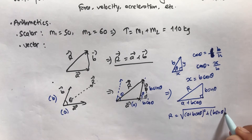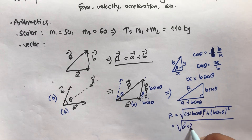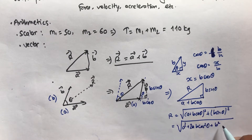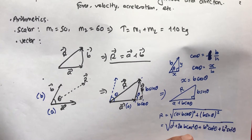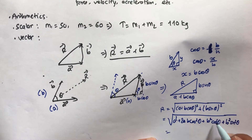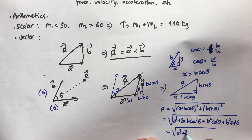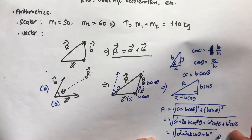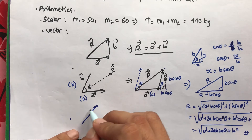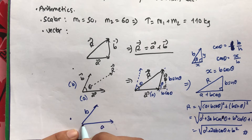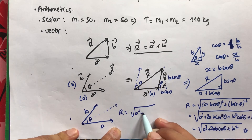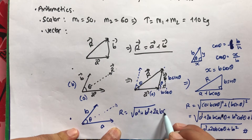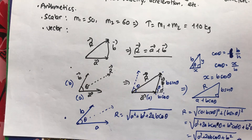Expanding that expression: r equals the square root of a² + 2ab·cos(theta) + b²·cos²(theta) + b²·sin²(theta). Since cos²(theta) + sin²(theta) equals one, this simplifies to the square root of a² + 2ab·cos(theta) + b². So the resultant of two coplanar vectors with magnitudes a and b and angle theta between them is r = √(a² + b² + 2ab·cos θ).